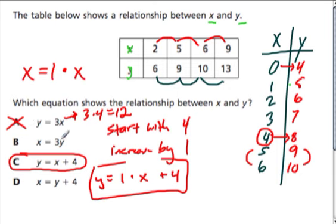x equals 3 times y. Well, if we have 8 for y, we plug y in, we should get 4 for x. So if I plug in 8, I get 3 times 8, which is 24. But I need to get 4. So b does not work.